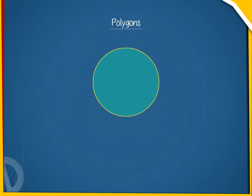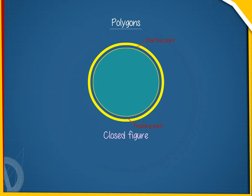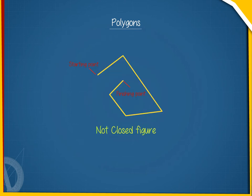A plane figure is said to be closed if the starting point coincides with the finishing point. This is a closed figure, whereas this is not closed.